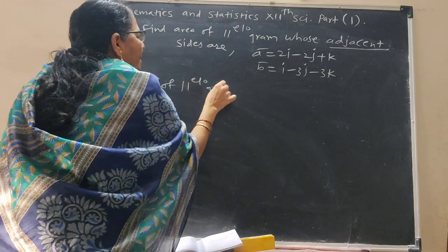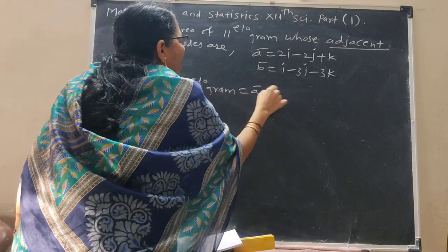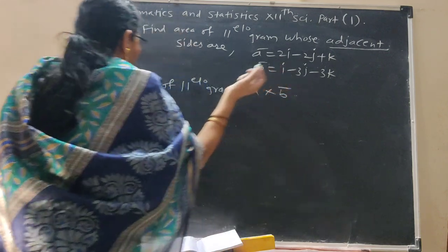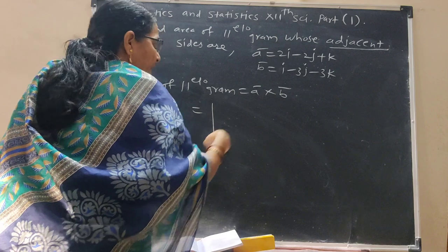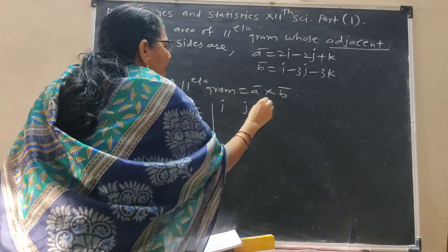Parallelogram: a bar cross b bar. That means determinant i, j, k.